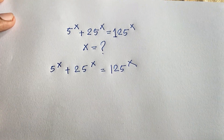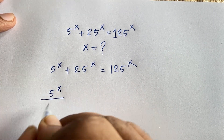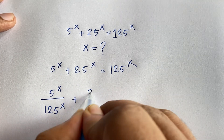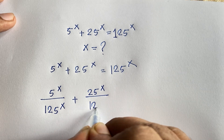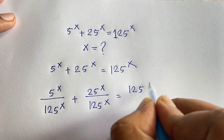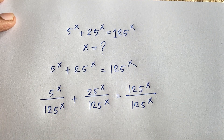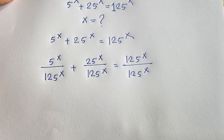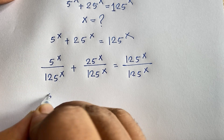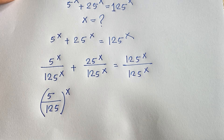At this moment, I divide both sides by 125 to the power x. So it will be: 5 to the power x over 125 to the power x, plus 25 to the power x over 125 to the power x, equals 1. Since the bases are the same, applying exponential rules, this becomes (5/125) to the power x.